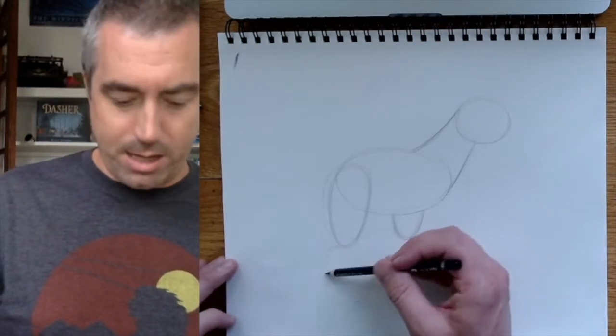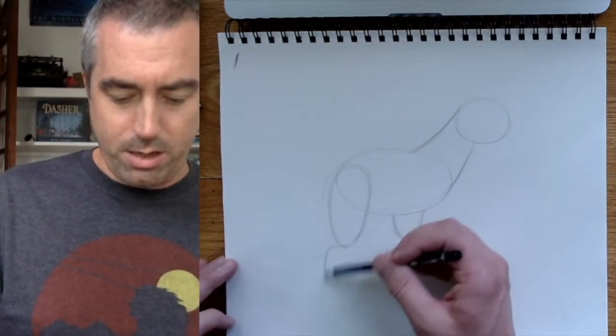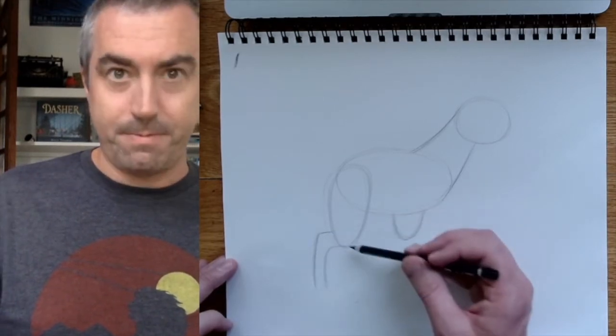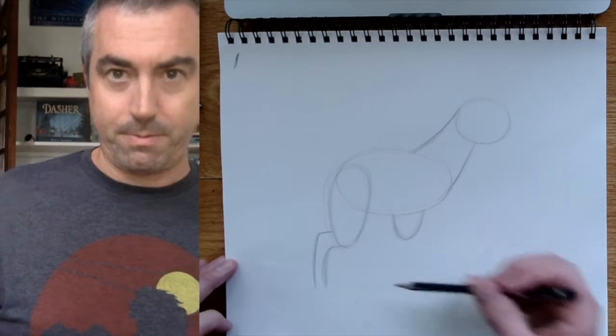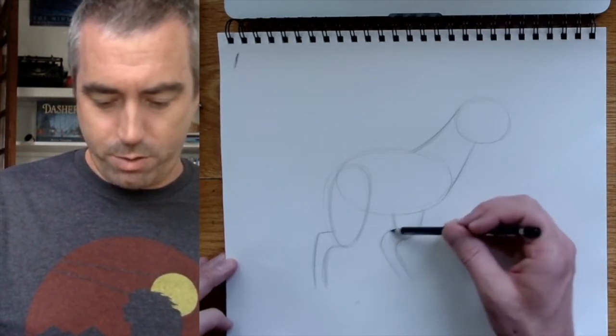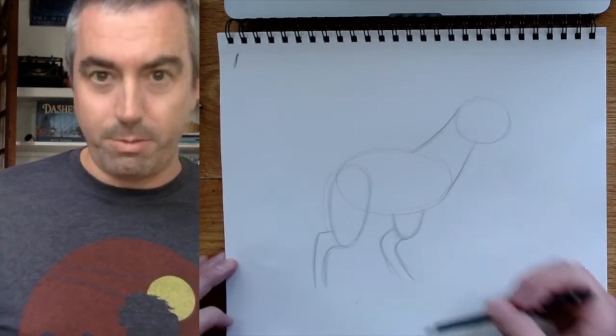Now the leg, it kind of comes back like this. So I'm going to make this other little shape coming out the back here. Maybe I'll do that to both of them. This one is sort of stepping forward. So I'll make that one tilted a little bit.